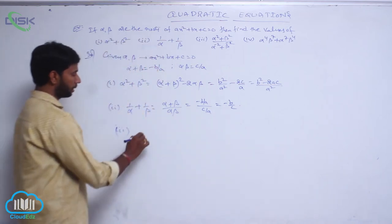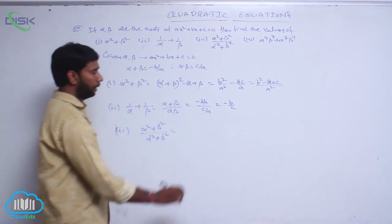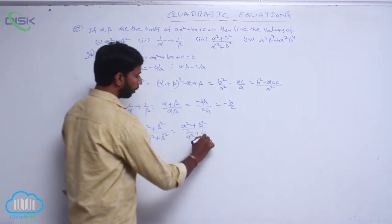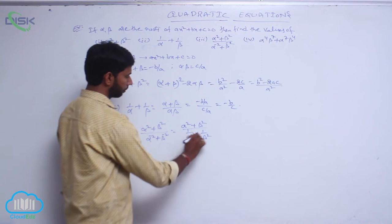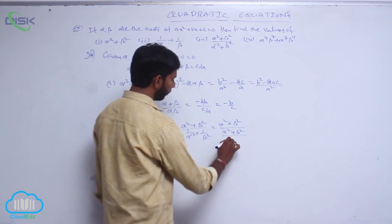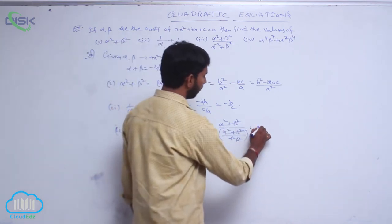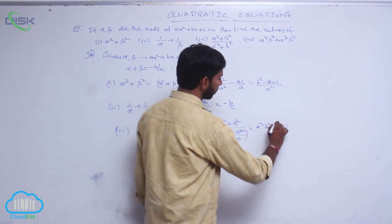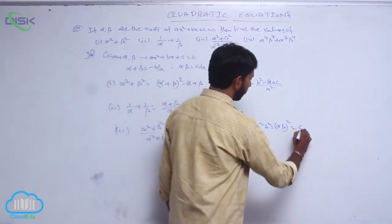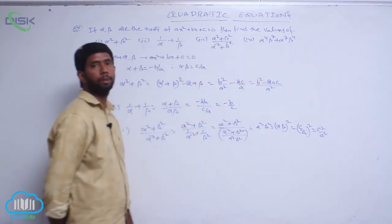The third one is alpha squared plus beta squared divided by alpha power minus 2 plus beta power minus 2. The denominator can be written as 1 by alpha squared plus 1 by beta squared. Taking LCM on the denominator gives alpha squared plus beta squared over alpha squared beta squared. The alpha squared plus beta squared cancels, leaving alpha squared beta squared, which equals alpha beta whole squared. Since alpha beta equals c by a, this equals c squared by a squared.